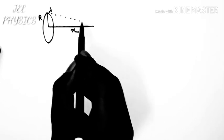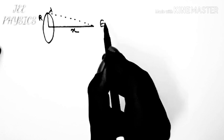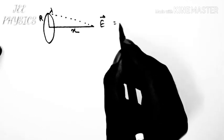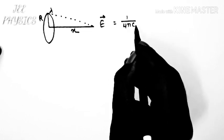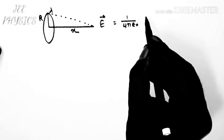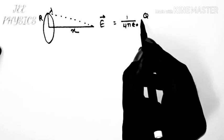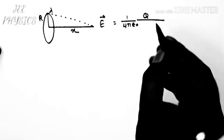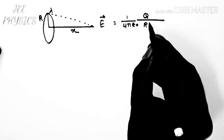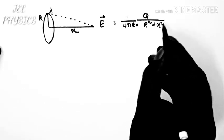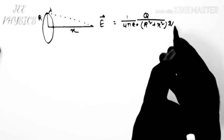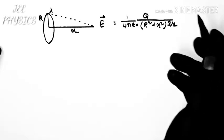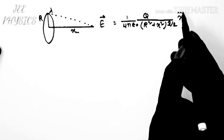The field was coming out to be E equals 1 by 4 pi epsilon naught q by r square plus x square whole to the power 3 by 2 into x.